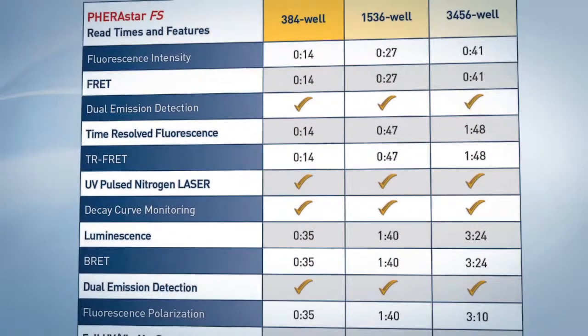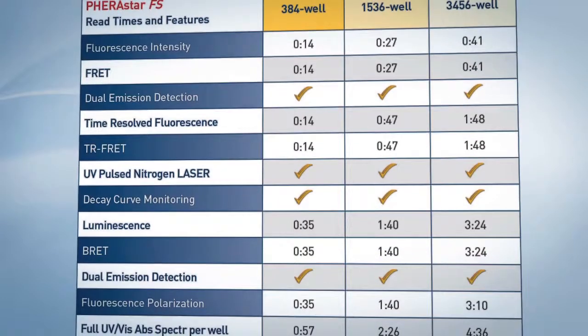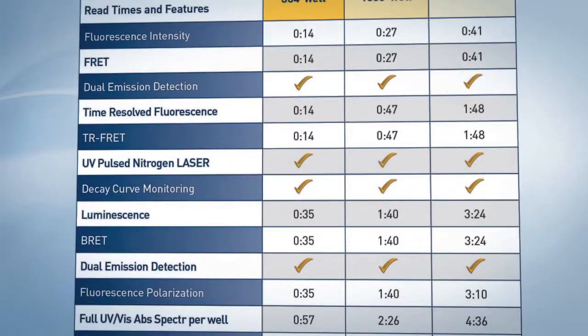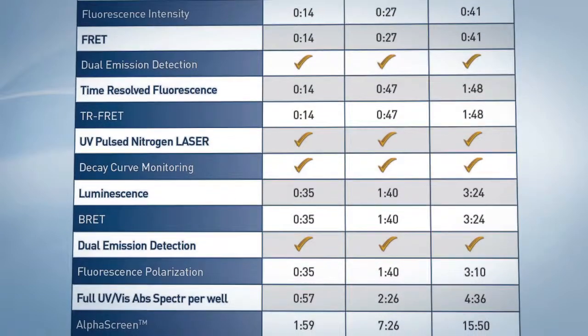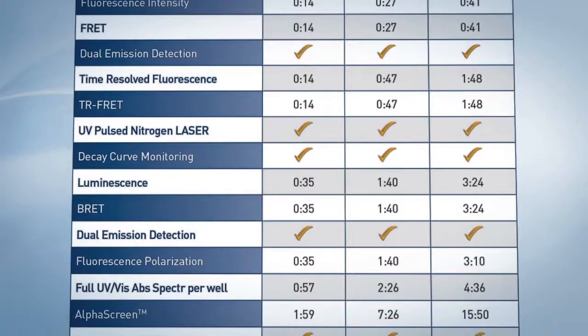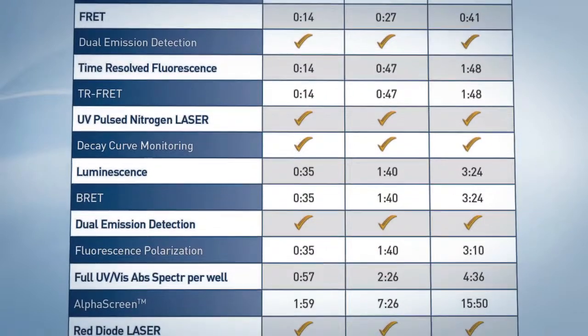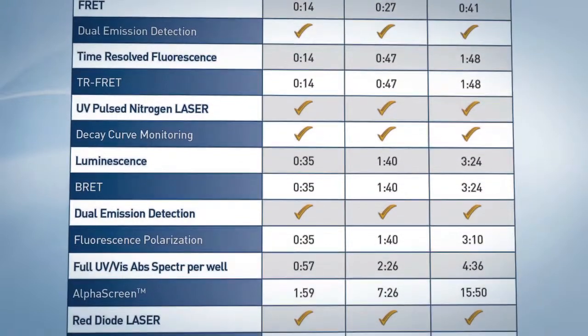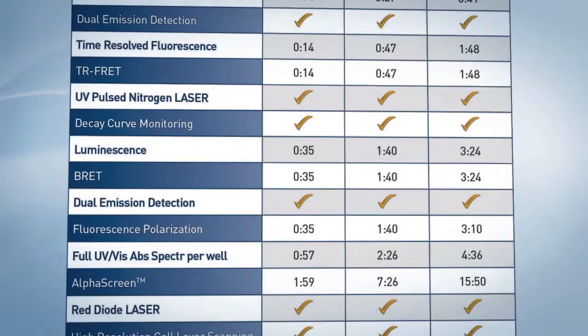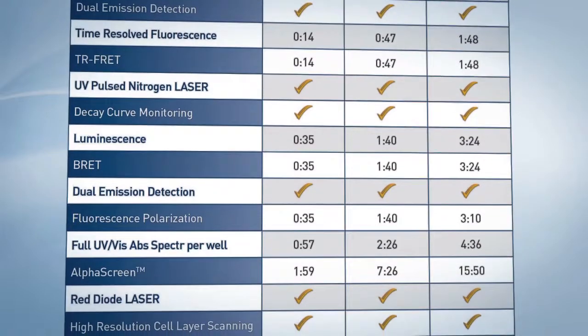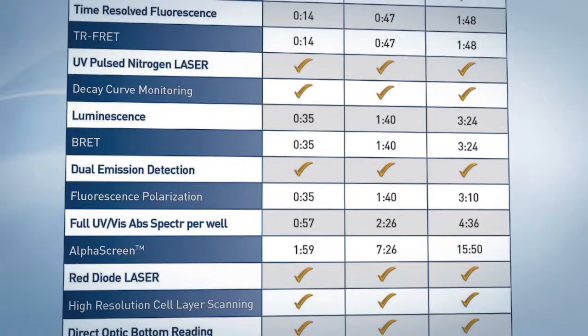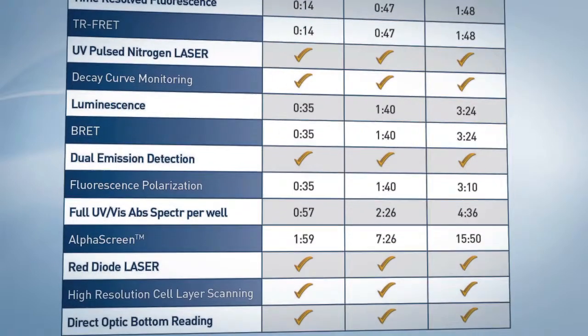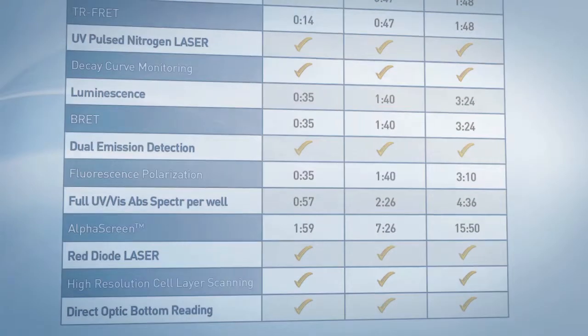Advanced assays such as FP, FRET, BRET, and TR FRET all greatly benefit from dual emission detection. In some assays, error rates are decreased by a factor of 1,000, allowing for greater sensitivity, larger windows, and higher Z prime values. This all adds up to one thing: the Ferristar FS can measure faster than any other microplate reader without sacrificing performance for speed.